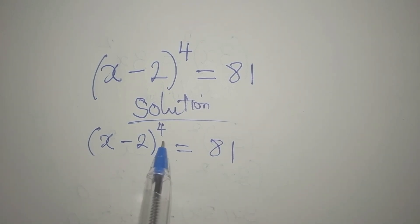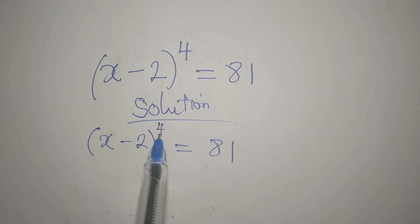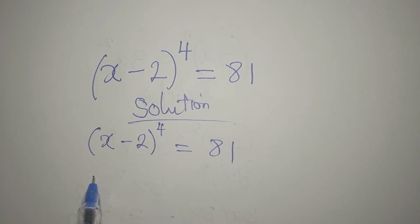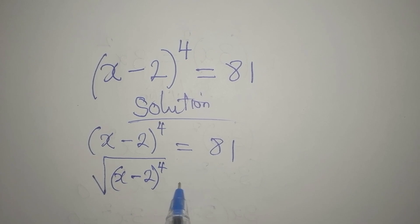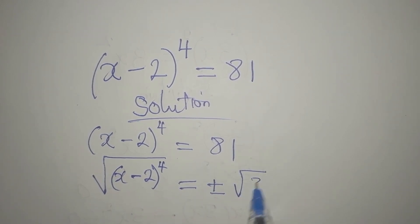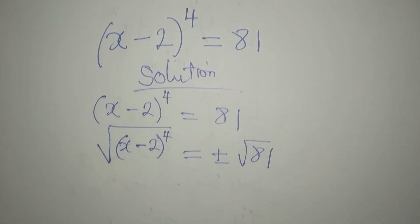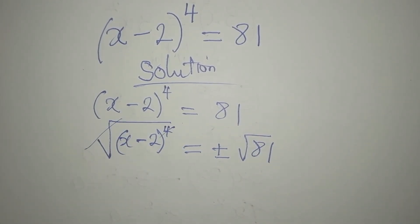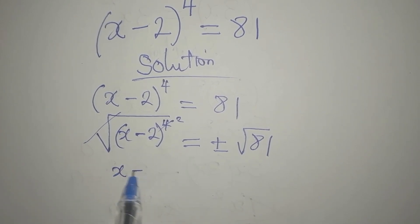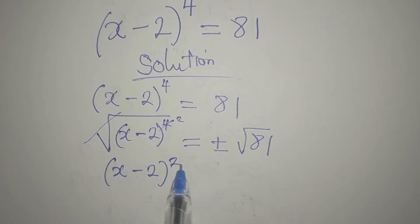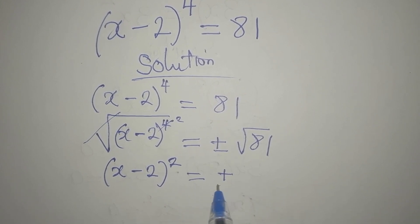Let's see if there is a way I can reduce this power here. To reduce this power, I will take the square root of the left side, and that is x minus 2 to the power of 4, and then we have positive or negative the square root of 81. So our x minus 2 to the power of 2 is now equal to plus or minus 9.